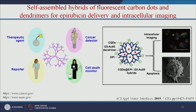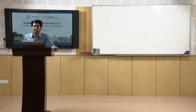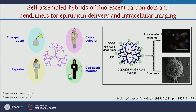We can make multifunctional dendrimer-based nanocarriers that contain both a therapeutic agent and an imaging agent, allowing us to monitor drug delivery efficiency. For example, a dendrimer loaded with the anti-cancer drug epirubicin — which has intrinsic red fluorescence — combined with carbon dots for green fluorescence, allows easy monitoring of drug delivery and nanoparticle uptake by cancer cells. We can use it for intracellular imaging and for studying how the anti-cancer drug induces apoptosis in cancer cells.